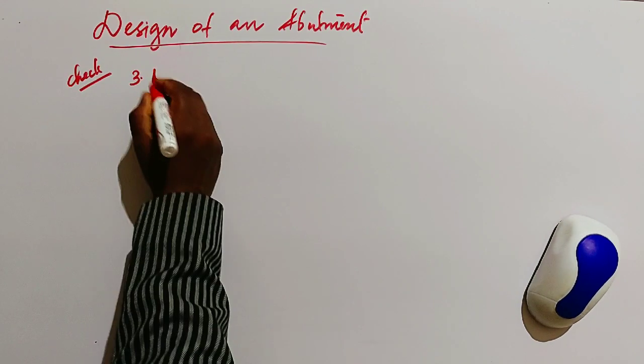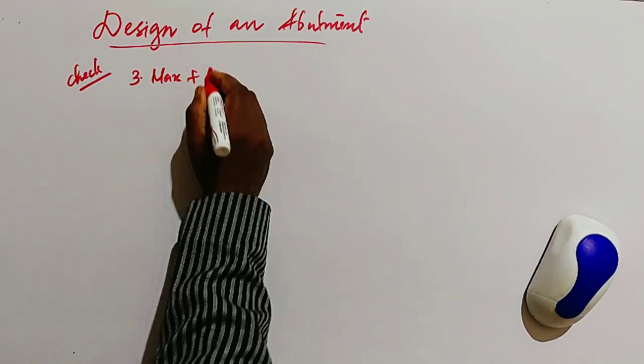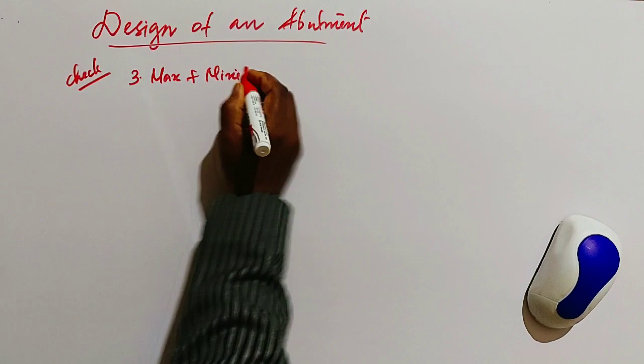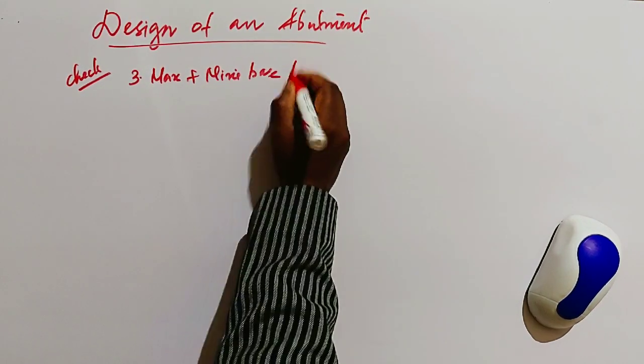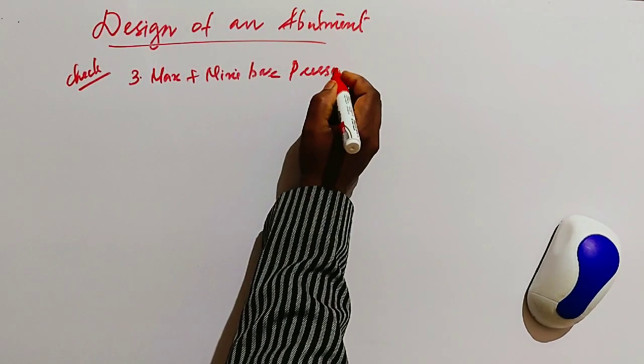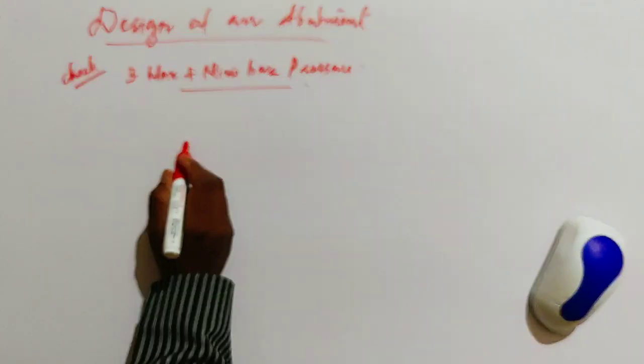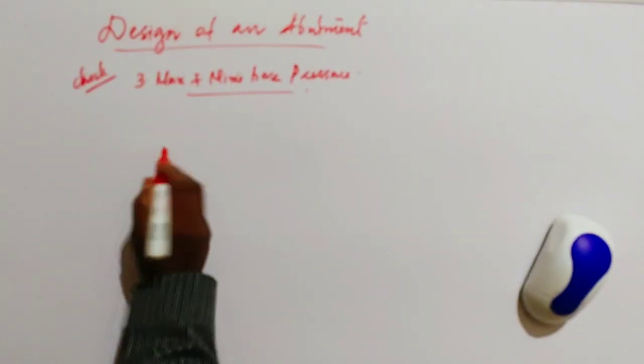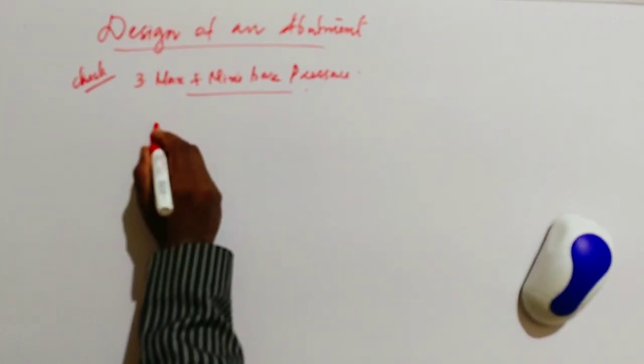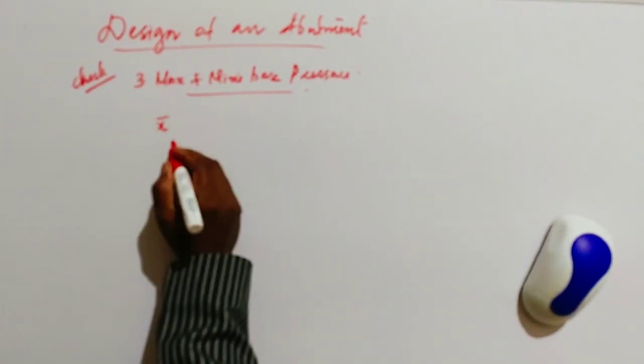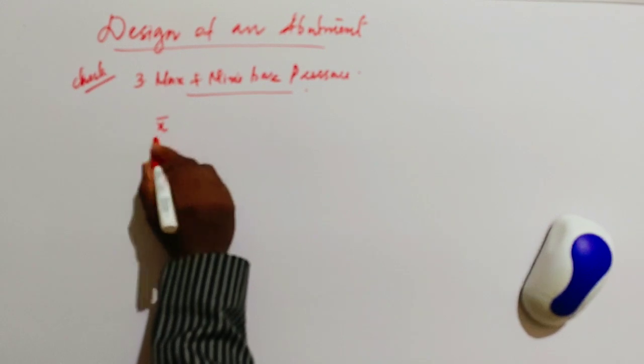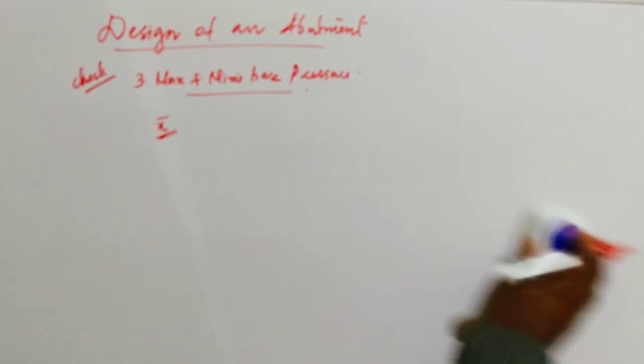Next, the maximum and minimum base pressure. The equation for maximum and minimum base pressure is P equal to W by B into 1 plus or minus 6E by B. All the resultant forces acting on the abutment must be such as to pass through a point located within the central portion of the base of the abutment, that is the middle portion location.